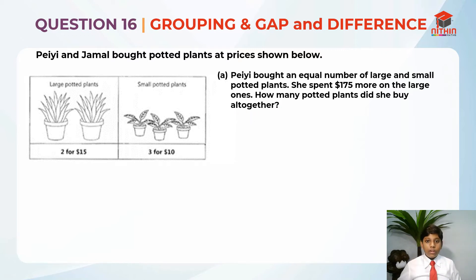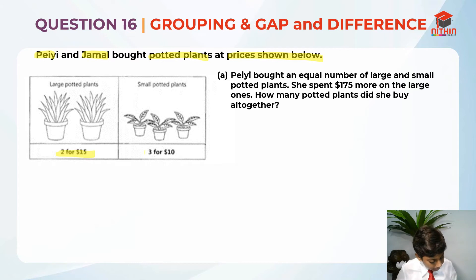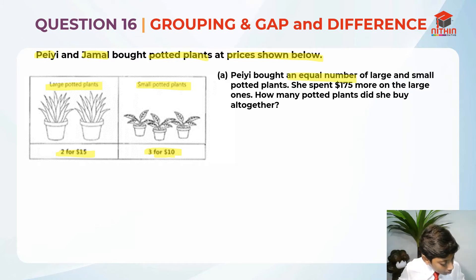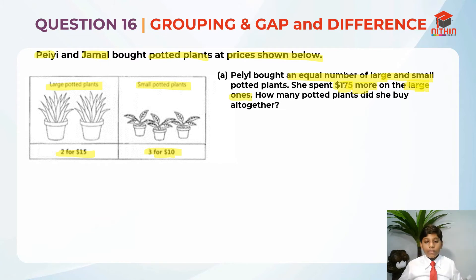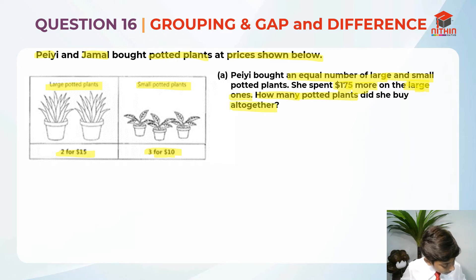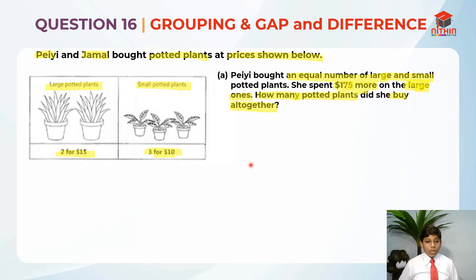Now that we have read the question, we should highlight the keywords. Payee bought an equal number of large and small potted plants. She spent $175 more on the large potted plants. They are asking how many potted plants did she buy altogether. Now that we have highlighted the keywords, let's move on to solving the question.